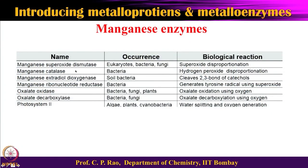Looking at the table of manganese enzymes — manganese enzymes are diverse. There are enzymes with one, two, or four manganese ions. Popular examples include: manganese superoxide dismutase, manganese catalase, manganese extradiol dioxygenase, manganese ribonucleotide reductase, manganese oxalate oxidase, oxalate decarboxylase, and photosystem 2.